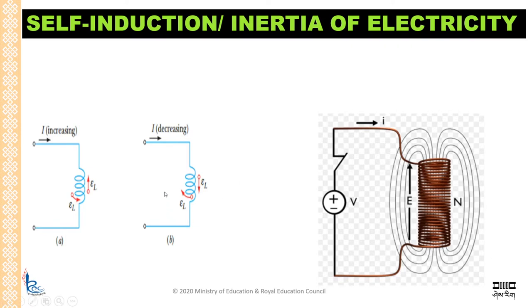When you now open the key, the current will start to decrease. So when current starts to decrease, the field lines will also start to decay. And this will further induce EMF in the coil, which will this time oppose the decrease of the current. This is also called self-induction.